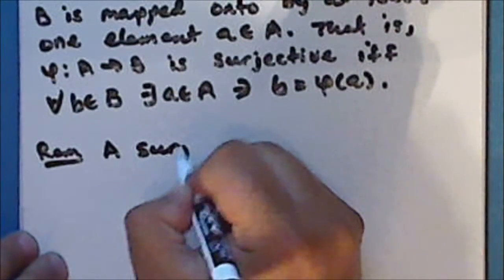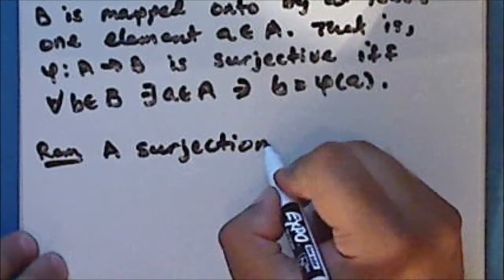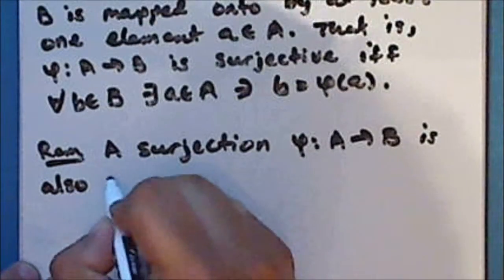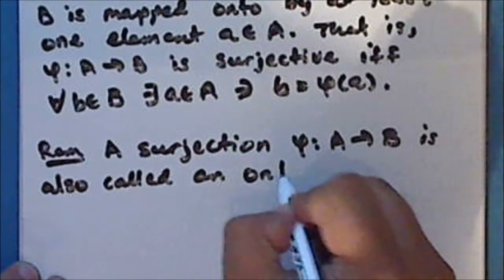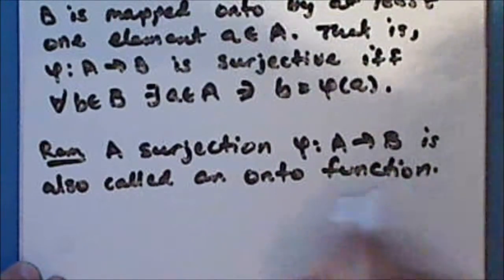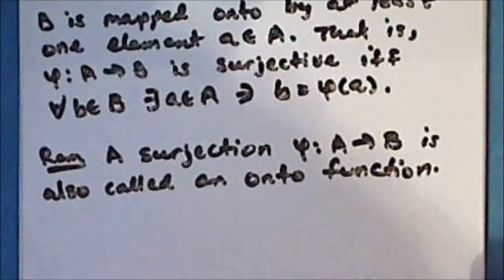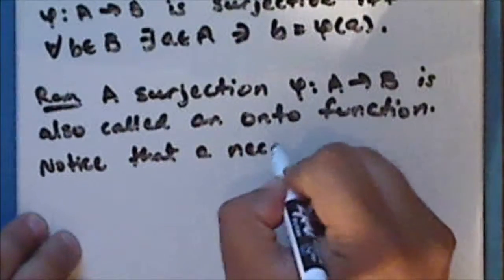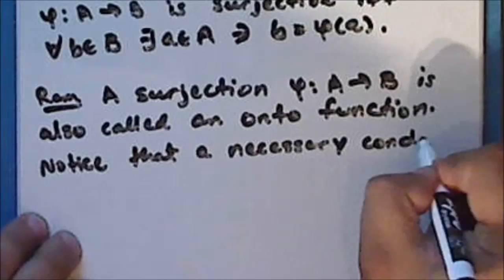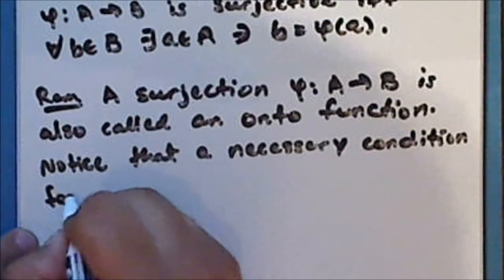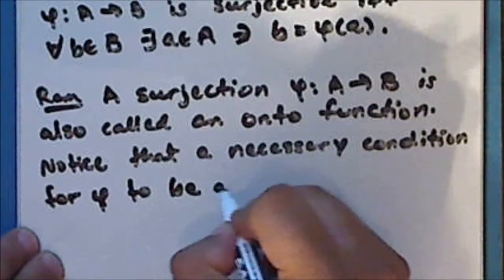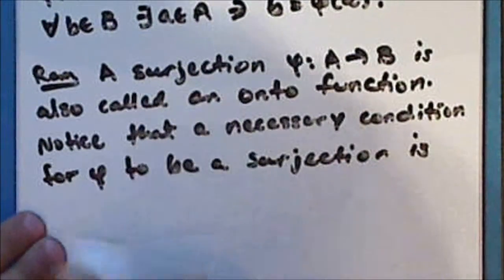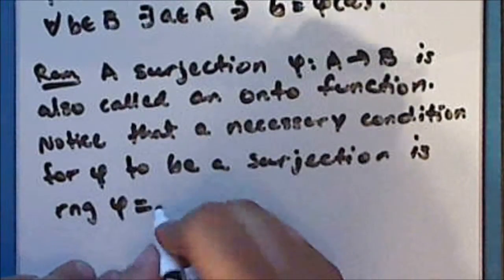A surjection mapping A into B is also called an onto function, since every element in the codomain B is mapped onto. Notice that a necessary condition for the function φ to be a surjection is that the range of φ must be equal to the entire codomain B.